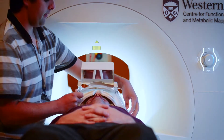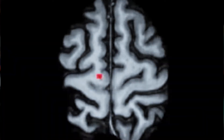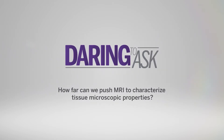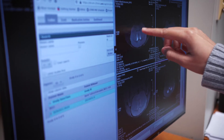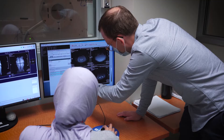The focus of our research is being able to better characterize the microscopic properties of brain tissue. We're daring to ask how far can we push MRI to characterize tissue microscopic properties so that it can help patients. We're trying to create better methods that characterize tissue properties more specifically — these properties might include the shape of the cells or whether there's inflammation, and sometimes the cell shape can become abnormal in disease, and we're trying to characterize that.